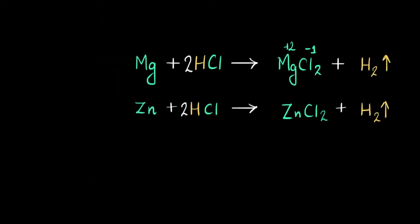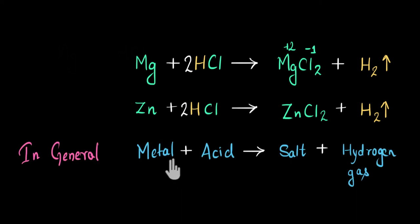So, so far we have seen that when metals react with acid, we get a salt and hydrogen gas is released. So I can say that in general, metals react with acid to give salt and hydrogen gas. And the reason why I'm writing in general is because not all acids react with the metals to give out hydrogen gas.